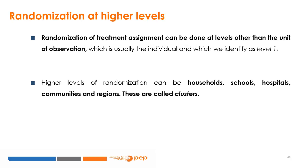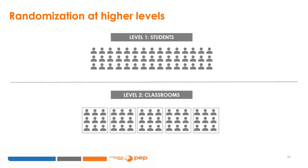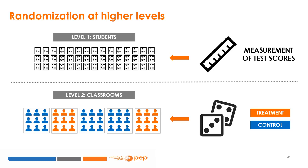Another important factor affecting sample size calculations is the level of randomisation. Randomisation of treatment assignment can be done at levels other than the unit of observation, which is usually the individual (level 1). Randomisation at higher levels can be households, schools, hospitals, communities, and regions — these are called clusters. For example, in an educational intervention aimed at improving test scores, level 1 consists of students and level 2 consists of classrooms. We can randomise an intervention to improve math scores across schools (level 2), but still measure the impact on test scores at the pupil level (level 1).